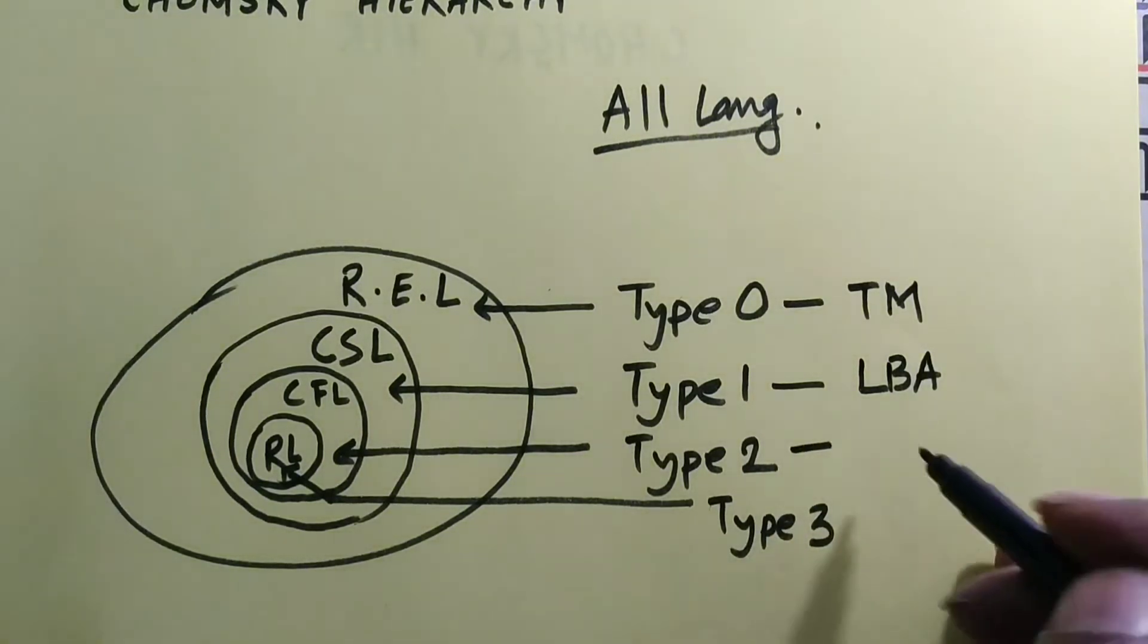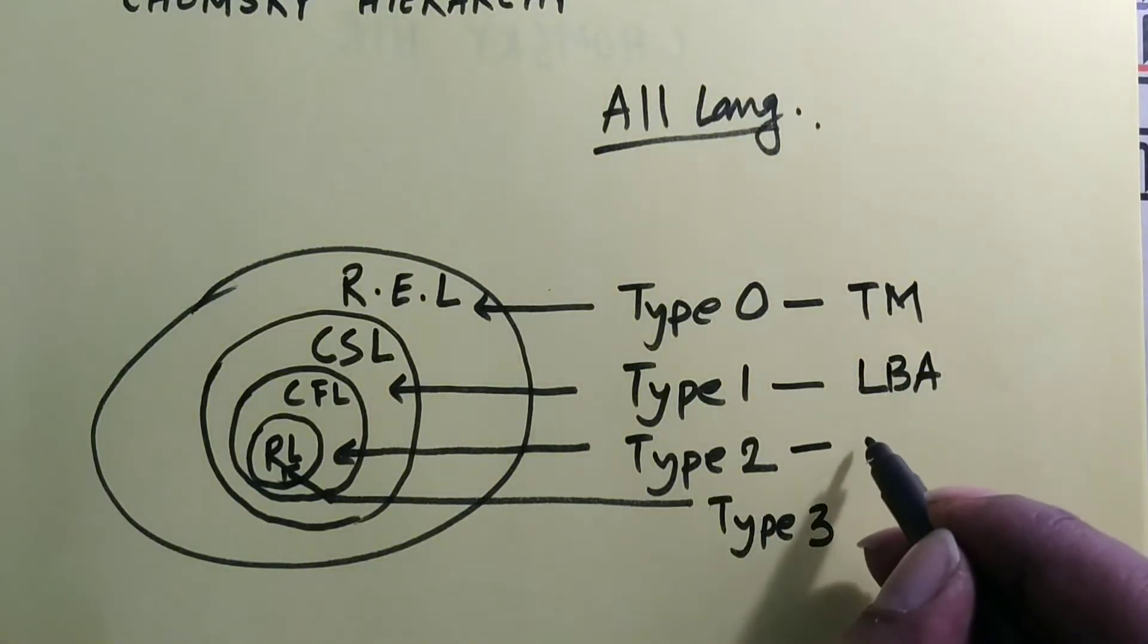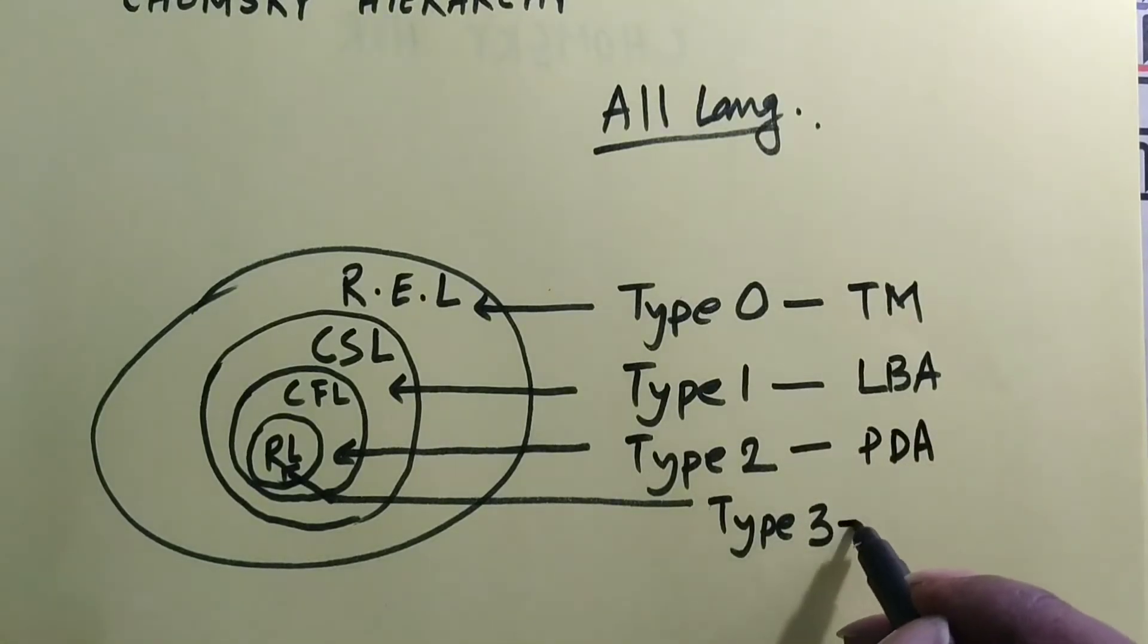Type 2 languages are recognized by PDA. Type 3 languages are recognized by finite automata.